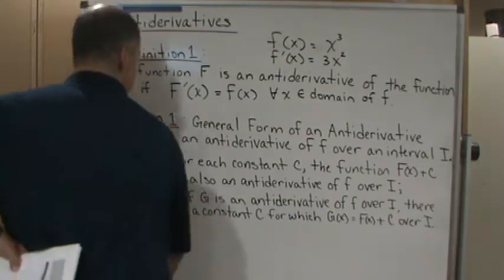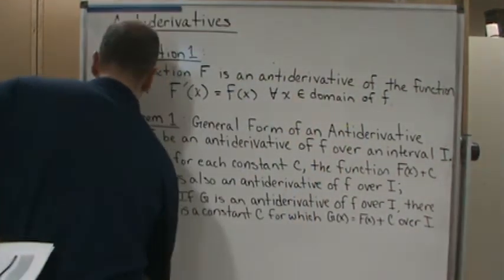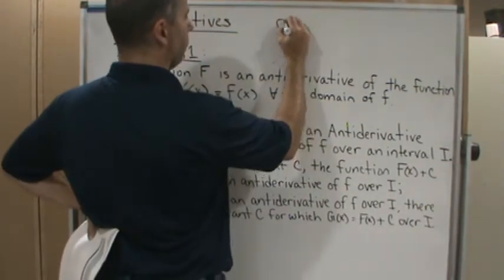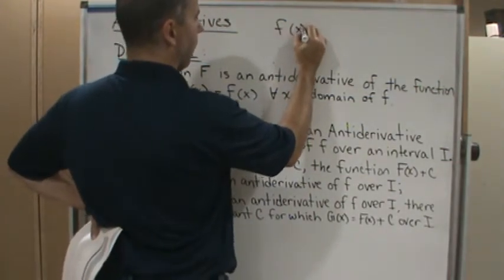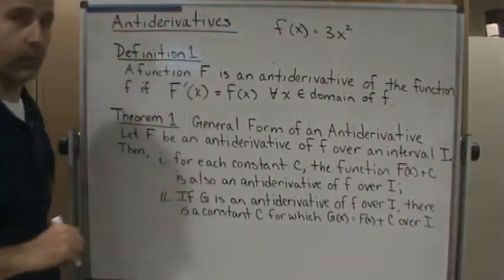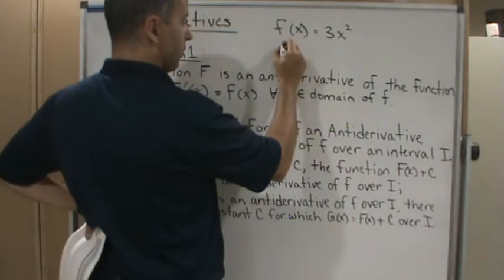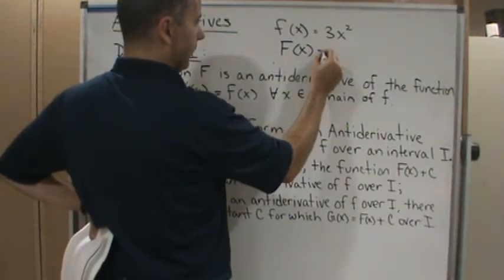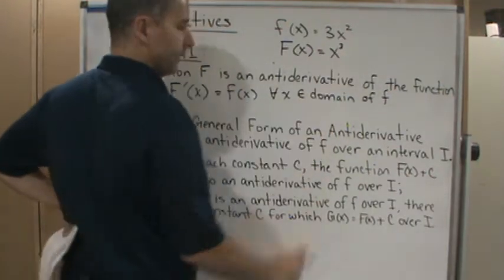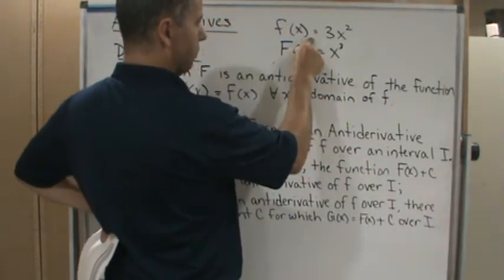So in other words, I could rewrite this another way. I could say, okay, well, I give you the function f(x) is equal to 3x squared, then the antiderivative of this would be f(x) equal to x cubed, right? Because the derivative of this equals this.